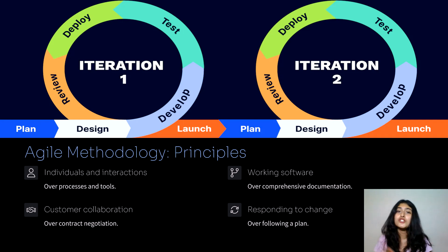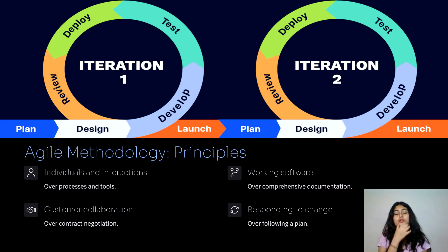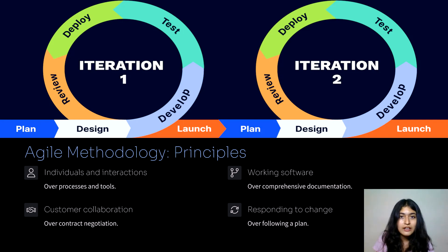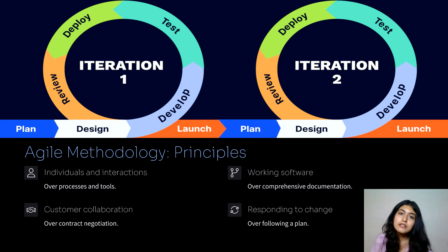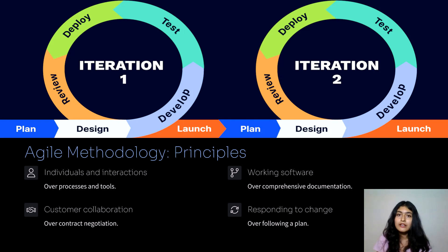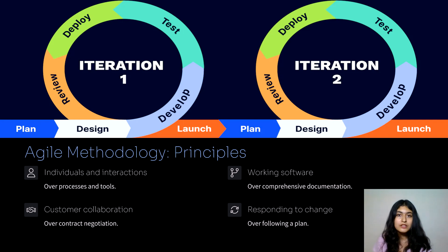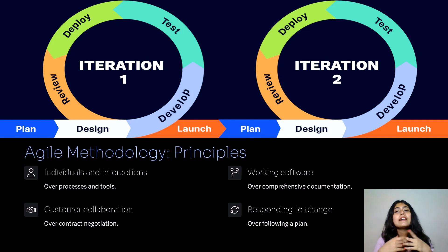For example, you are a client who wants to develop a website or app and you give 50 requirements. In agile, requirements are not fixed — you can change, update, delete, or remove them. In the planning stage, they decide to take the first 10 requirements first. These 10 requirements are then designed, developed, and tested. If two bugs are found in the testing phase, they still deploy — end users can use it and give feedback. One iteration takes around one to three weeks.